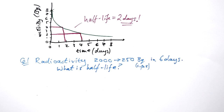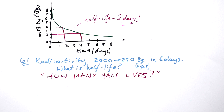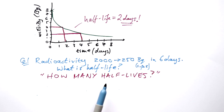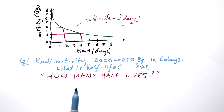So we have a question here. We have an isotope where the radioactivity goes from 2,000 Becquerel to 250 Becquerel in six days. How long is the half-life? Whenever you have a question involving half-life, you must remember to ask yourself this simple question: how many half-lives? Is it one, two, three, maybe even four? Chances are we're probably not going to go past four half-lives.